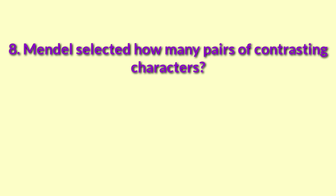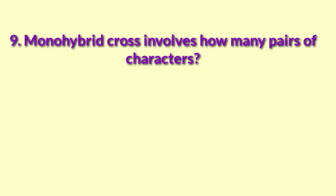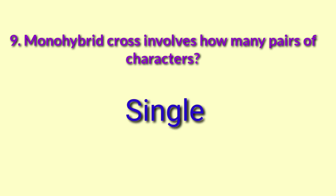Mendel selected how many pairs of contrasting characters? Seven pairs of contrasting characters were selected by Mendel. Monohybrid cross involves a single pair of characters.